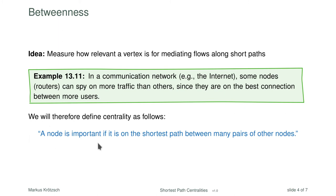The idea for betweenness is that a node is important if it is on the shortest path between many pairs of other nodes. In a road network, this would be a place where a lot of traffic goes through — not because the place is intrinsically important, but because if you want to go from one place to another via a short route, you are likely passing through this point. These points are quite different from those defined by other centrality notions so far.